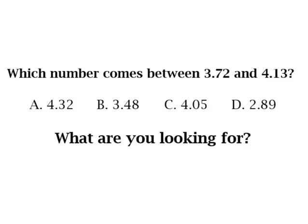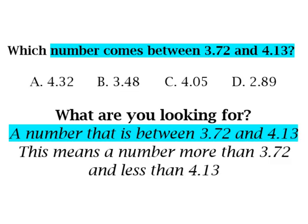When solving a problem, the first thing we must do is find out what we are looking for. For this problem it's pretty easy. We are looking for a number that comes between 3.72 and 4.13. That means the number must be more than 3.72 and less than 4.13.